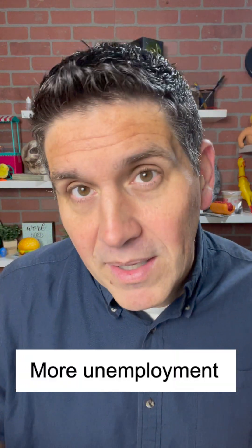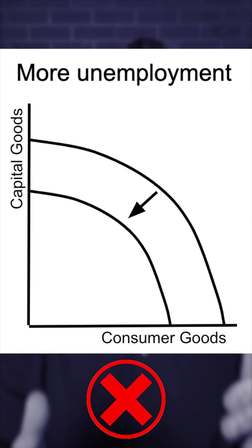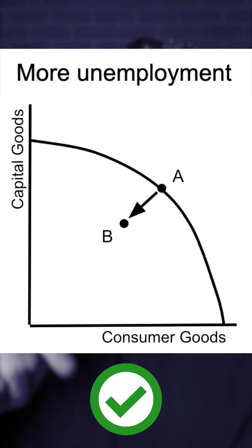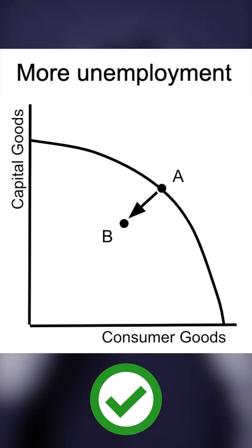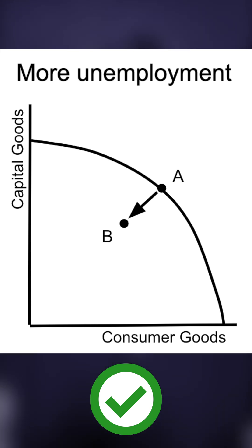Three tricky things your teacher or professor is going to ask you about the production possibilities curve. The first one is when an economy goes into recession and gets high unemployment. Many students think that means there's a shift inward of the production possibilities curve, but that's not right. It's really just a point inside the curve — the workers are alive, they're just not working. The entire curve would shift inward if the workers were dead.